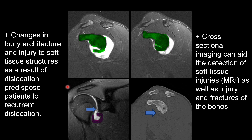T2 MRI will also give us a good look at the soft tissue structures surrounding the shoulder joint. So we have again the humeral head, the glenoid, as well as in purple the capsule, and a blue arrow pointing to the labrum, which in this case we can see is torn from the glenoid. We can also see a defect in the anterior inferior portion of the glenoid here. Finally, the CT image allows us to clearly see that same defect in the glenoid.